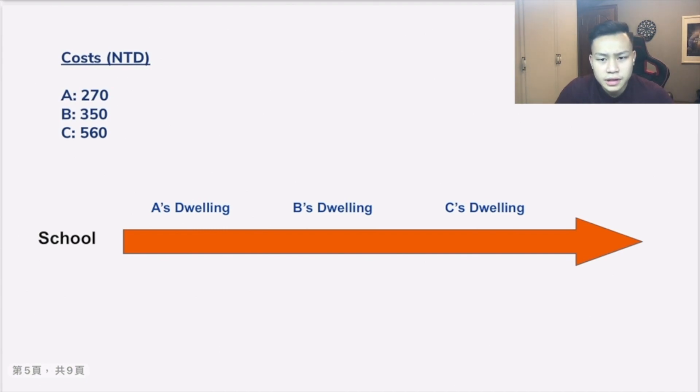Now let us first consider the question that was given to us. Recall, here ABC each represents Alice, Bob, and Catherine. Recall that if Alice has taken the taxi by herself, then it would cost her 270 NTD. And if Bob had taken the taxi by himself, then it would cost him 350 NTD. Notice that these differences in prices also imply something about each of their distances from school.